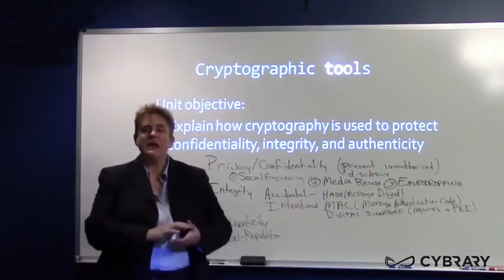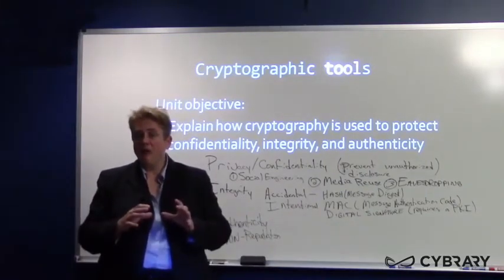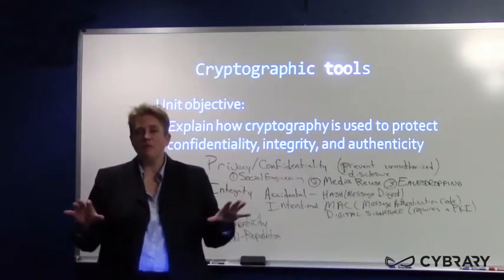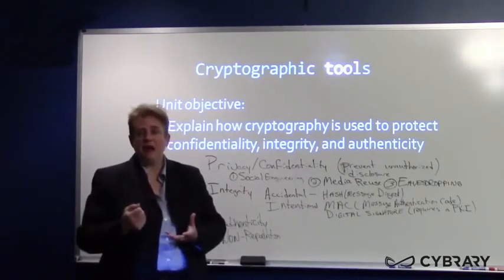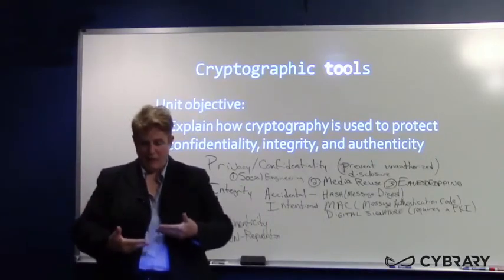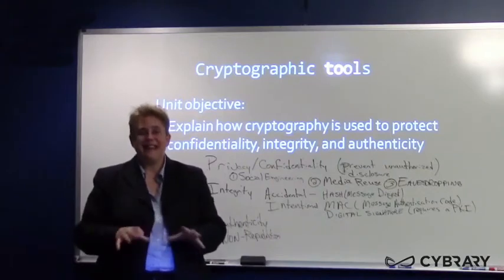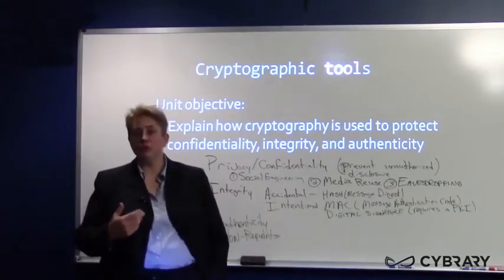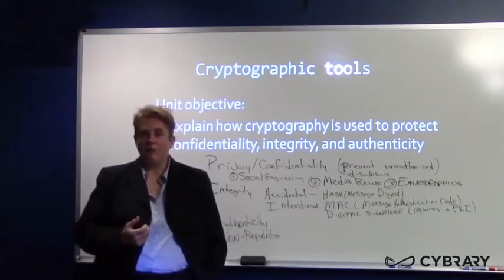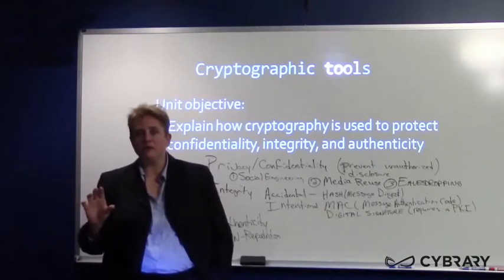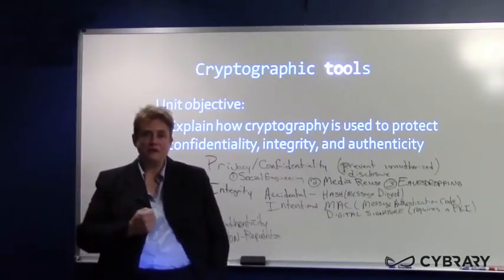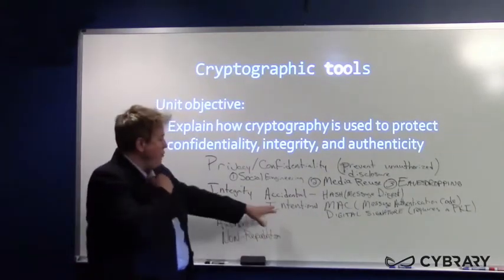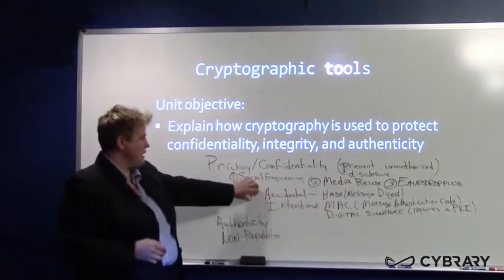The whole purpose of integrity is to create a baseline image of a file. It's like if I have a class of students and I say I don't want anybody to move — I take a picture, step outside, come back, take another picture, and compare the two. If they look the same, nobody moved. That's what a hash, MAC, and digital signature do: they produce a digital representation of a file. I hash the file, send it to you, and you do the same process. If your image matches mine, we know there hasn't been a modification.